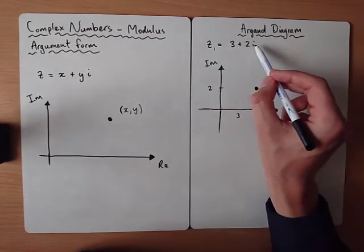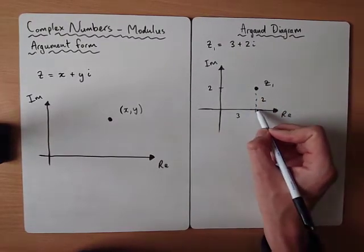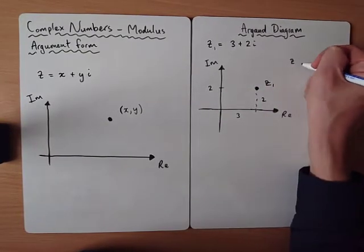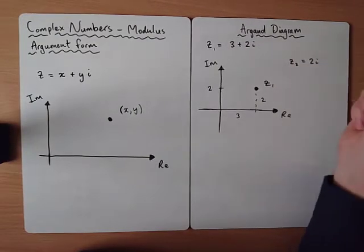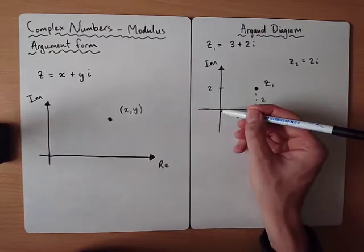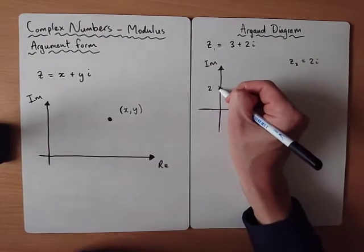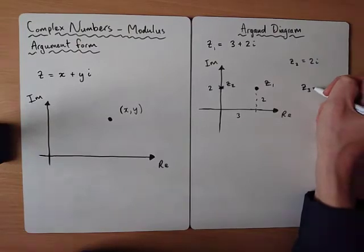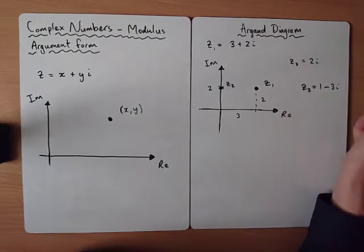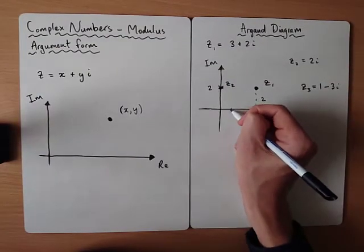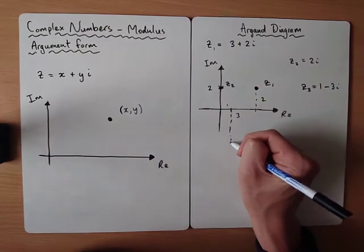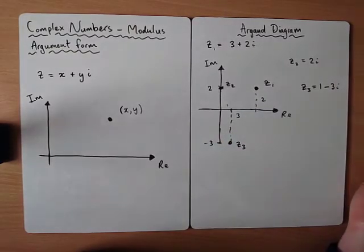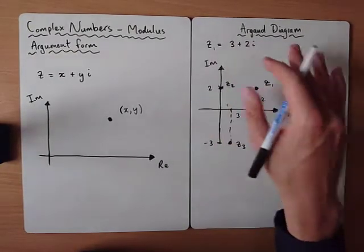For example, if z1 = 3 + 2i, that means move 3 across on the real axis and 2 up on the imaginary axis. If z2 = 2i, we don't move on the real axis and just move up 2 on the imaginary axis. Or if z3 = 1 − 3i, we move 1 across on the real axis and 3 down on the imaginary axis.